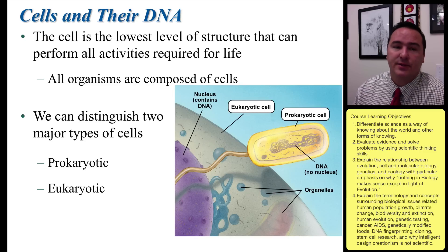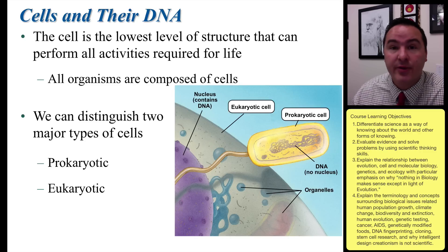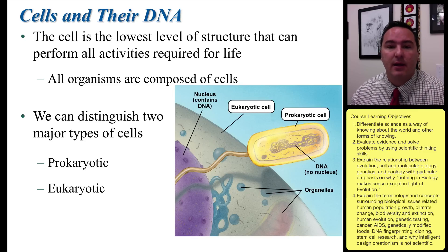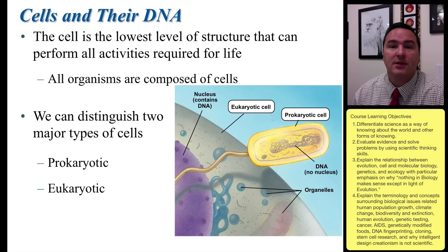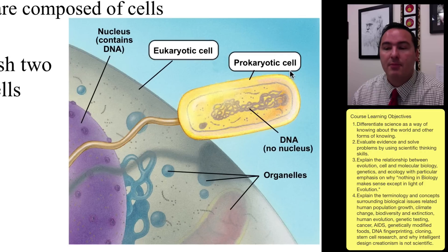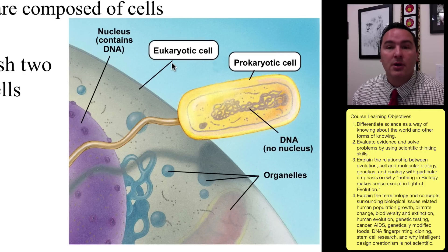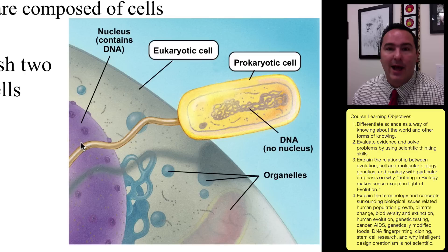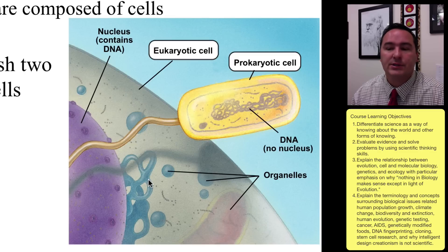One major theme we'll learn throughout the semester is cells and their DNA. There are two main types of cells on this planet: eukaryotic cells and prokaryotic cells. Eukaryotic cells are generally much larger — they have a nucleus that houses the DNA and also have lots of organelles that perform different functions.